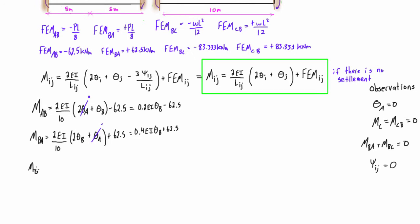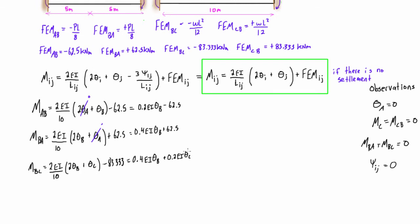For M-BC, we get 2EI over the length of BC, which is also 10 meters, times 2 theta-B plus theta-C, plus the fixed end moment of BC which is negative 83.333. There are no theta-A terms to cancel here, so distributing gives us M-BC equals 0.4 EI theta-B plus 0.2 EI theta-C minus 83.333.